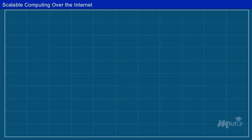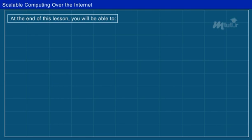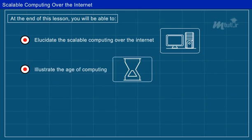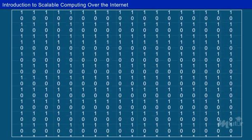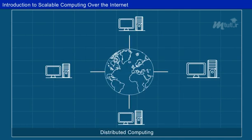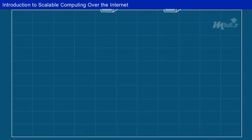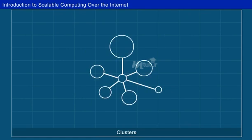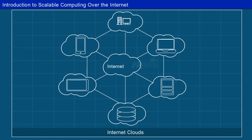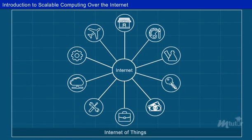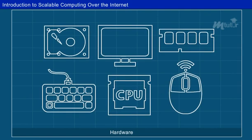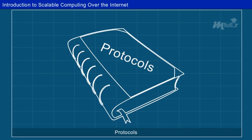Scalable Computing Over the Internet. At the end of this lesson, you will be able to elucidate Scalable Computing Over the Internet and illustrate the Age of Computing. Over the past 30 years, there have been several evolutionary changes in parallel, distributed and cloud computing. In parallel computers, high-performance and high-throughput computing systems appeared as clusters, service-oriented architecture, Internet clouds, peer-to-peer networks and Internet of Things.